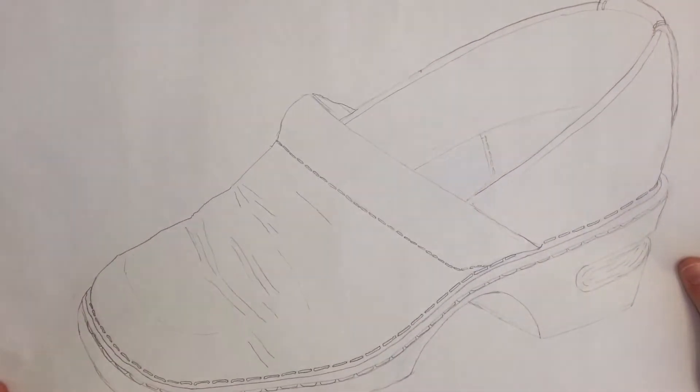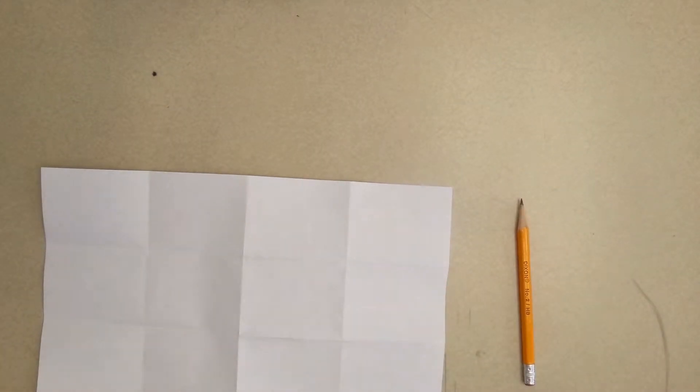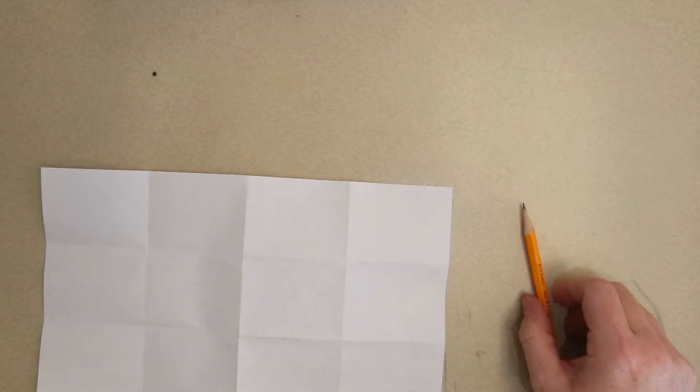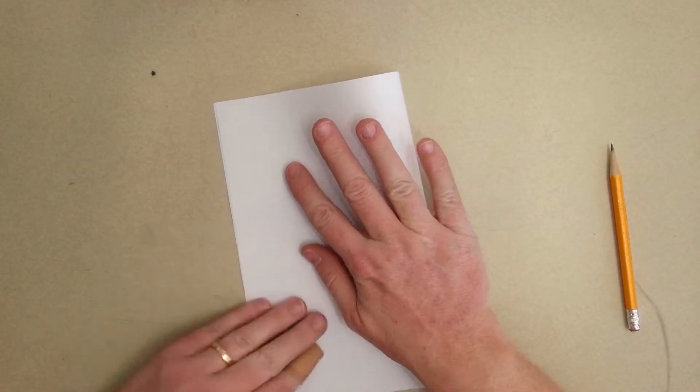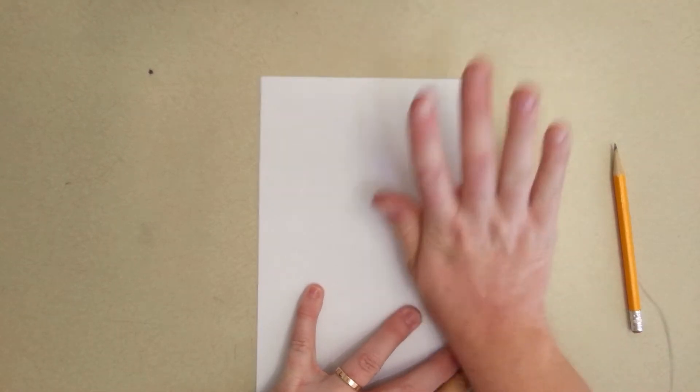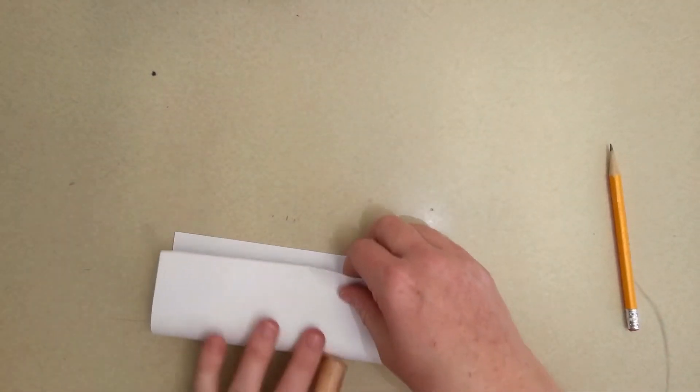But what we're going to do is, once you've finished drawing your shoe like this, you're going to take a piece of white paper from my desk. Just the white copy paper will be fine. And you're going to fold it in half, and then fold it one more time.